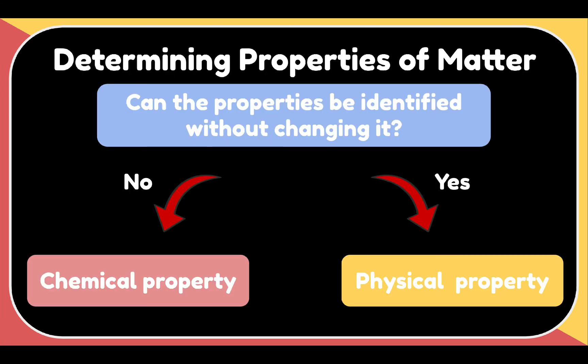Here's a simple organizer in determining properties of matter. So you just have to ask yourself, can the properties be identified without changing it? If your answer is no, then it is a chemical property. If it's yes, then you are describing a physical property.